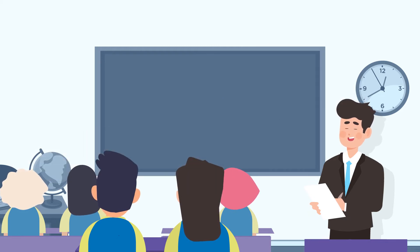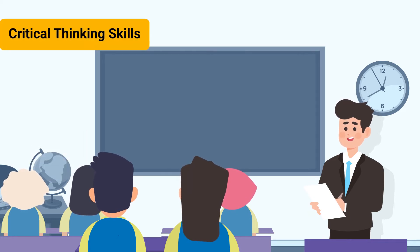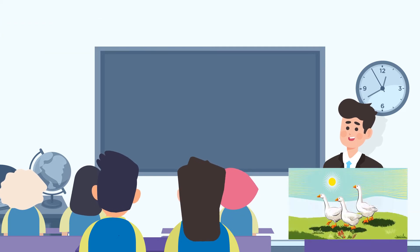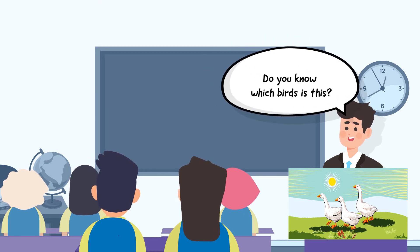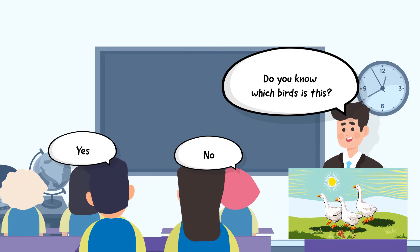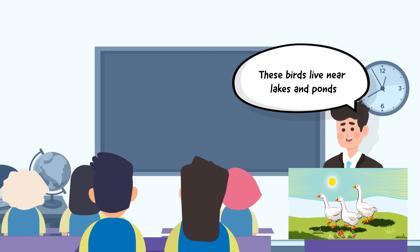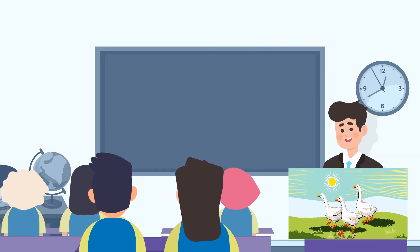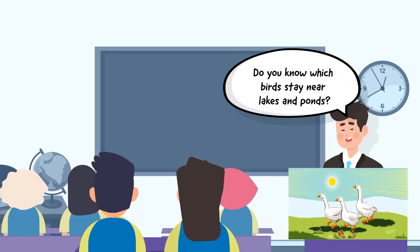Then display the picture card of the geese that we have arranged previously and ask simultaneously: Do you know which bird is this? Let the students respond. To give them a hint, inform the students that these birds live near a lake. Then ask again: Which birds live near lakes and ponds?